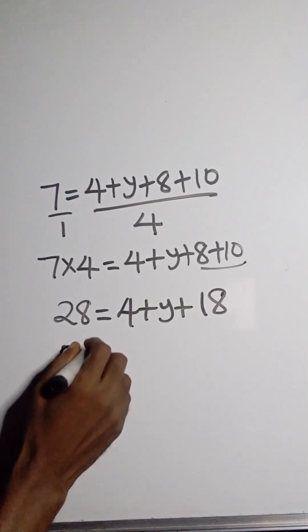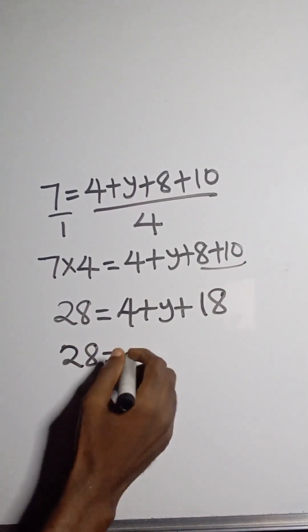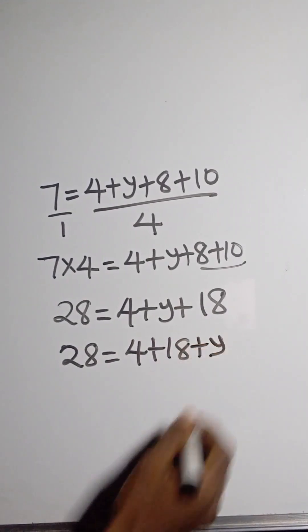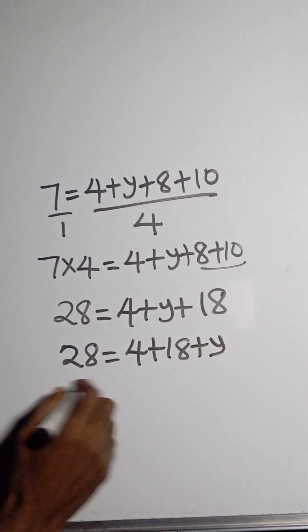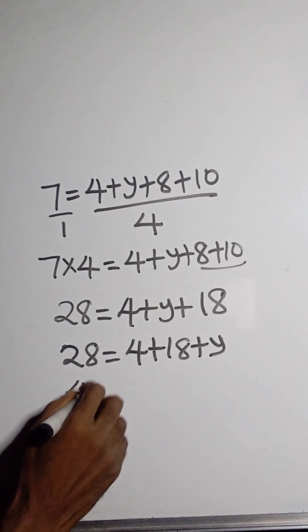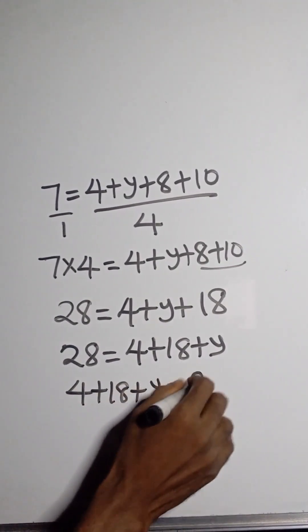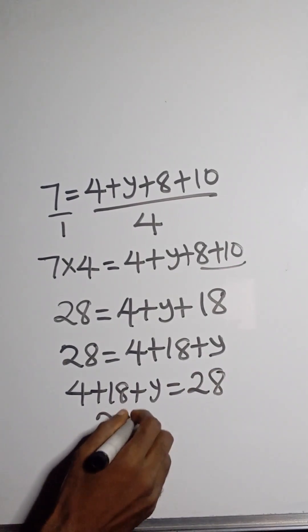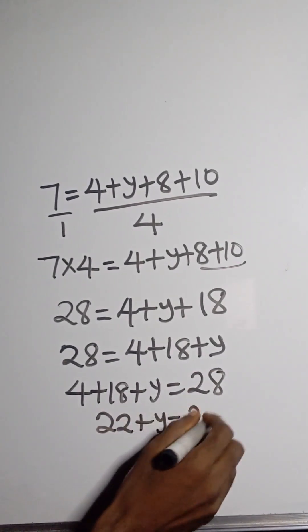Now I can further write this: 28 is equal to, collect like terms, so I have 4 plus 18 plus y. So let's keep this to the right, so I have 4 plus 18 plus y is equal to 28. 4 plus 18 will give us 22 plus y is equal to 28.